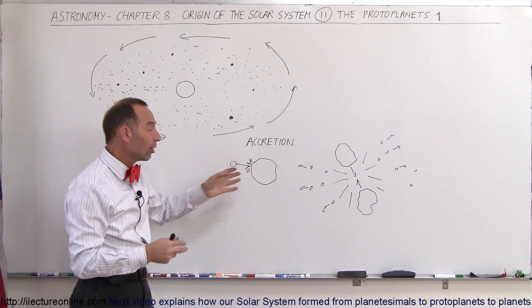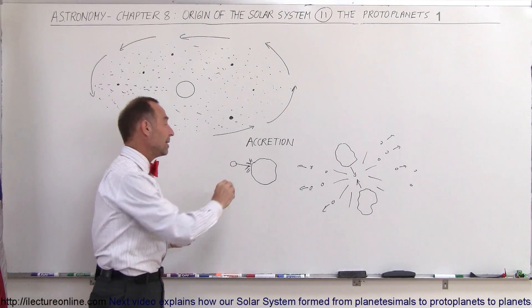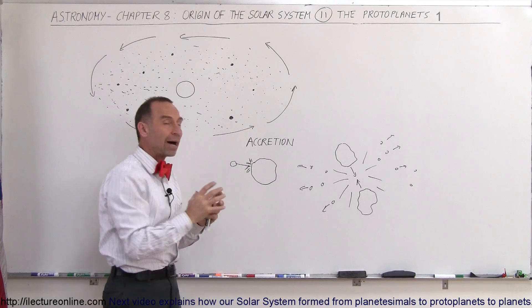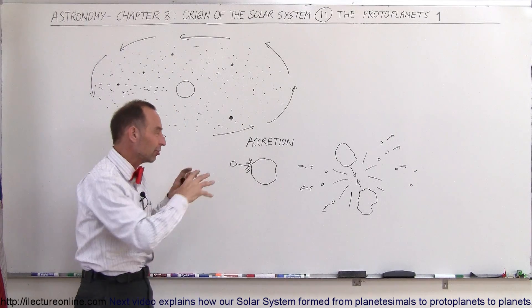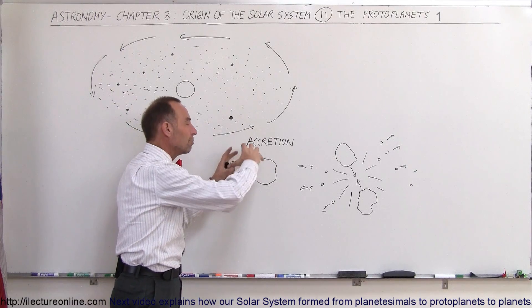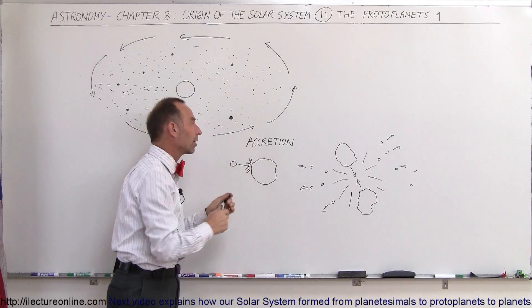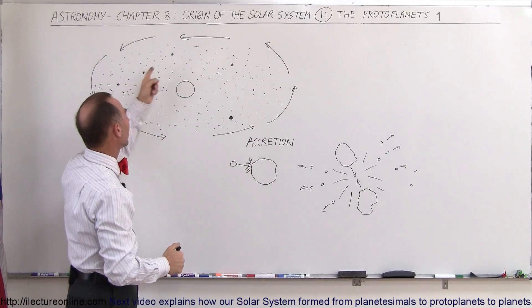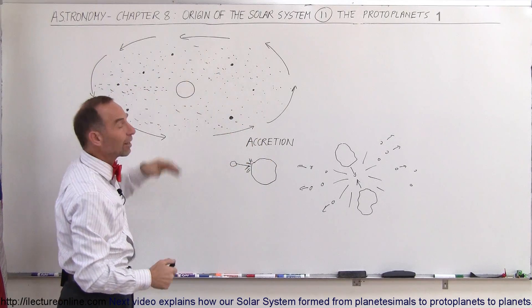Sometimes the collision resulted in accretion, meaning a small body would impact a big body, and there would be enough gravitational attraction to keep the two together and slowly build bodies into larger objects. And so that's why these small planetesimals or protoplanets began to form.